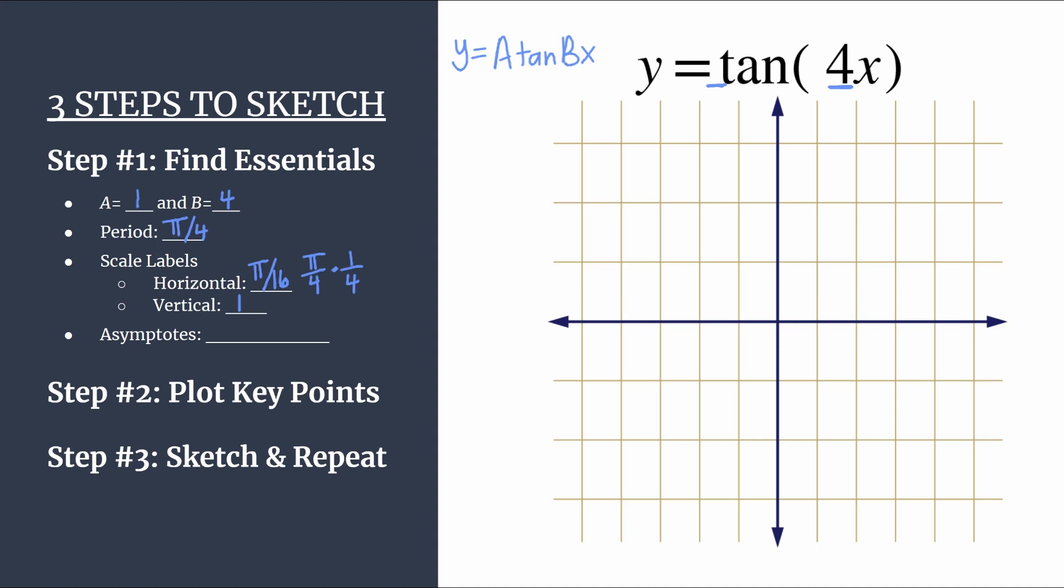We'll count by pi over 16 to label our horizontal tick marks. So we have 1 pi over 16, 2 pi over 16 which reduces to pi over 8, 3 pi over 16, 4 pi over 16 which reduces to pi over 4. I like to pause here. With this method and with this setup, our fourth horizontal tick mark to the right of the origin should match the period. It's a great way to check yourself. Our period is pi over 4, our fourth tick mark is pi over 4. We're doing well. And then we'll keep going, 5 pi over 16. We can have almost identical labels for the other side with negative signs. Negative pi over 4 and negative 5 pi over 16. Let's label our vertical axis counting by ones.